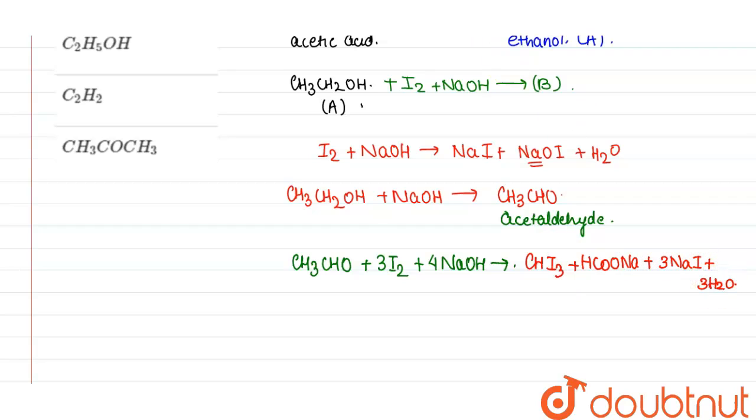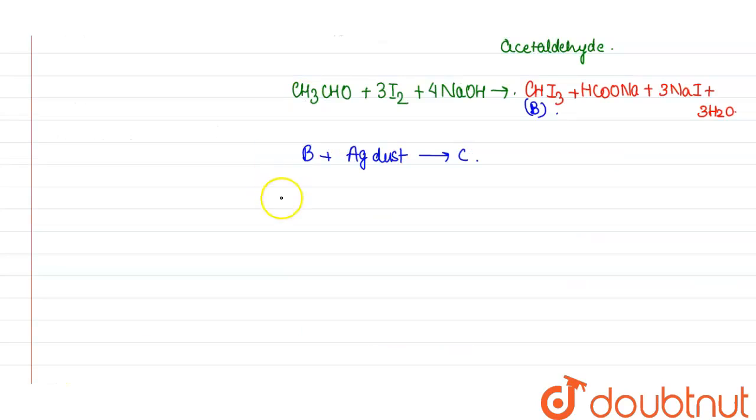So the B compound here is this CHI3. Now this B will react with Ag dust to give us C. So the reaction will be CHI3, 2 moles will react with 6 Ag and it will give us C2H2 along with 6 AgI.